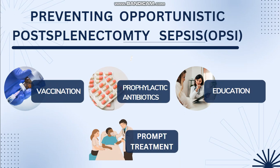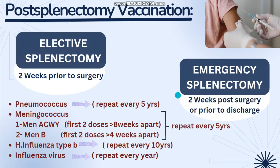The prevention of opportunistic post-splenectomy sepsis can be done by four basic steps: vaccination, prophylactic antibiotics, education of the patient, and prompt treatment. For post-splenectomy vaccination, in elective splenectomy you vaccinate the patient two weeks prior to surgery. In emergency, you give the vaccine after two weeks of surgery or prior to discharge. We need to vaccinate against pneumococcus — repeated every five years — meningococcus, H. influenzae type B, and influenza virus.